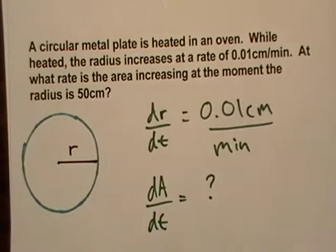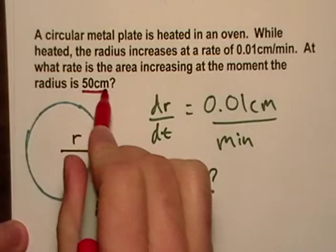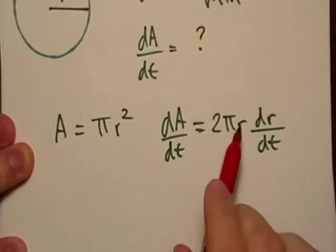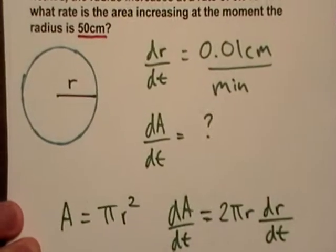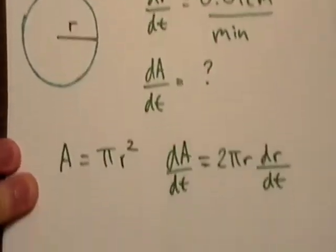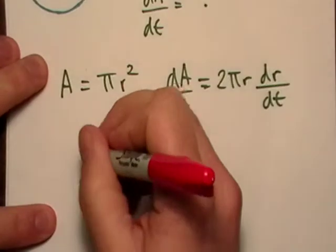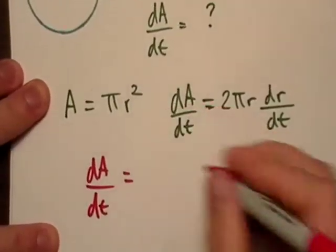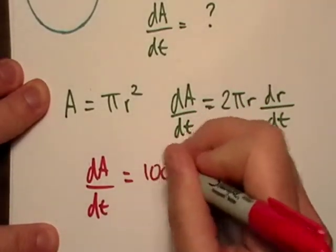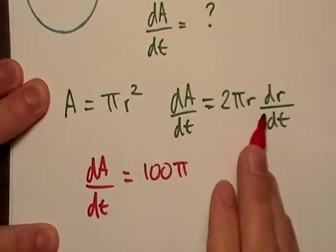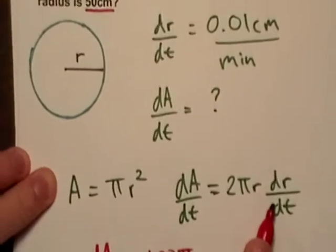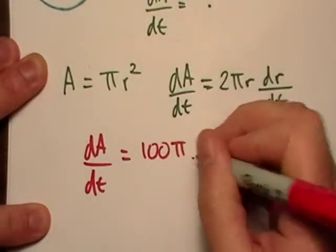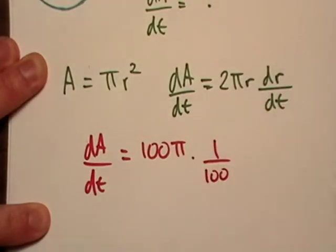We're interested in the moment that 50 centimeters is going on. So let's go back here and we'll sub in 50 for r and dr/dt, that's 0.01, right? So let's go ahead and let's actually just see. r is going to be 50. So 2 times 50, well that's just 100. So we get 100 pi times dr/dt. Dr/dt was 0.01. So let's just, actually we can just multiply by that by 100.